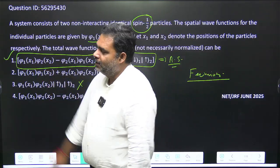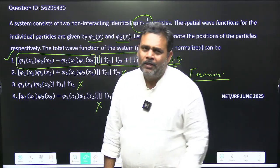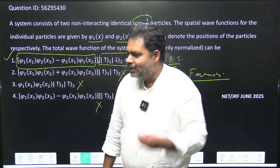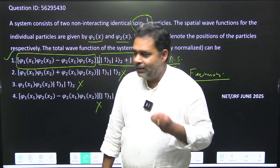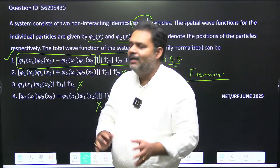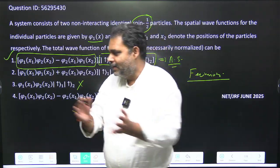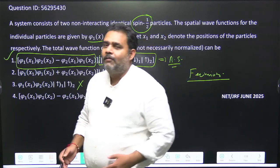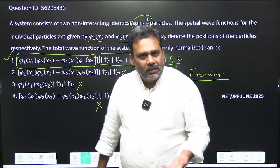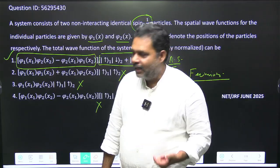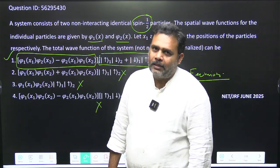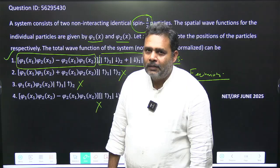Option one is the correct answer. This is just a definition — how you write the symmetric and anti-symmetric wave functions using the Slater determinant. This is all the key knowledge you need to have. Thank you.